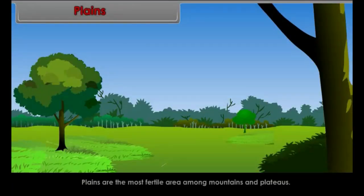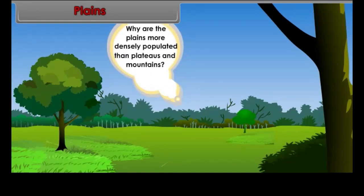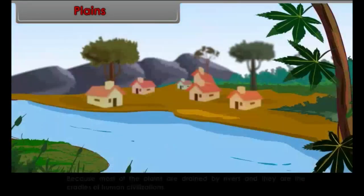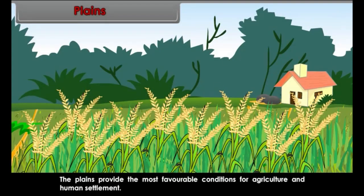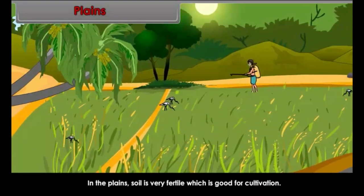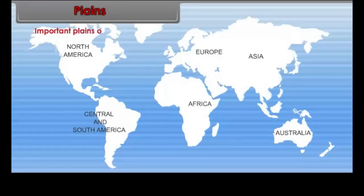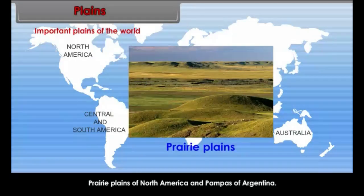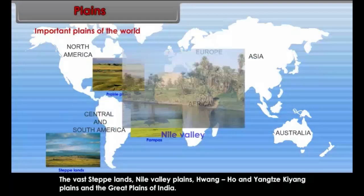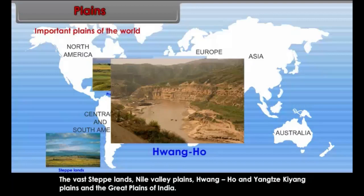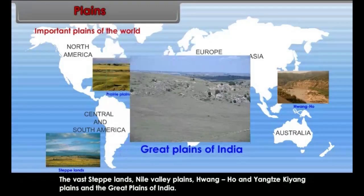Plains are the most fertile area among mountains and plateaus. Most of the plains are drained by rivers and they are the cradles of human civilizations. In the plains, soil is very fertile, which is good for cultivation. Some of the important plains of the world are the Prairie Plains of North America, Pampas of Argentina, the vast steppe lands, Nile Valley Plains, Quangho and Yangtze-Kiang Plains, and the Great Plains of India.